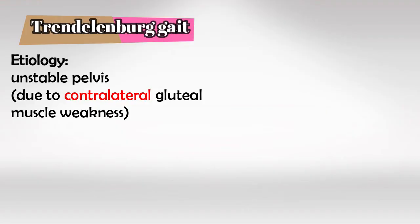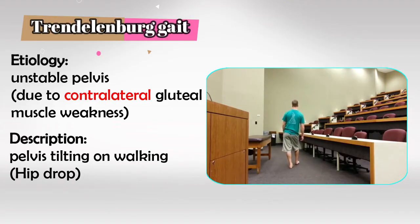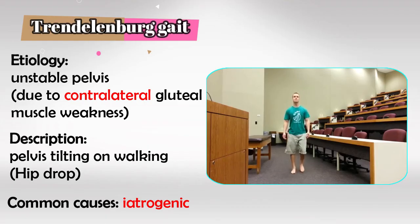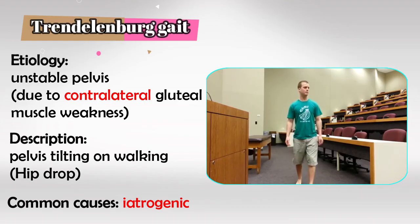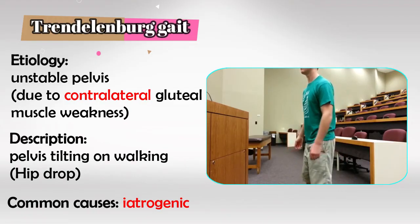Trendelenburg gait, however, is due to damage to one gluteal muscle on one side. So waddling is due to bilateral damage and Trendelenburg is due to unilateral damage. In Trendelenburg gait, the pelvis is unstable and will drop or tilt with every step, and medical mistakes are the most common cause. When giving the patient gluteal muscle intramuscular injections, give the injection in the superior lateral quadrant of the gluteal muscle to avoid causing Trendelenburg gait.